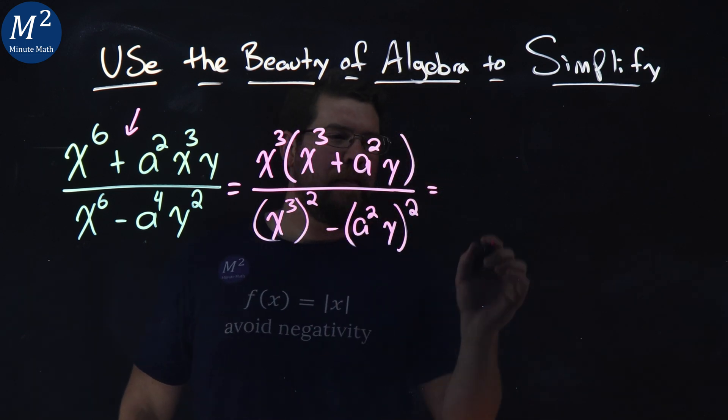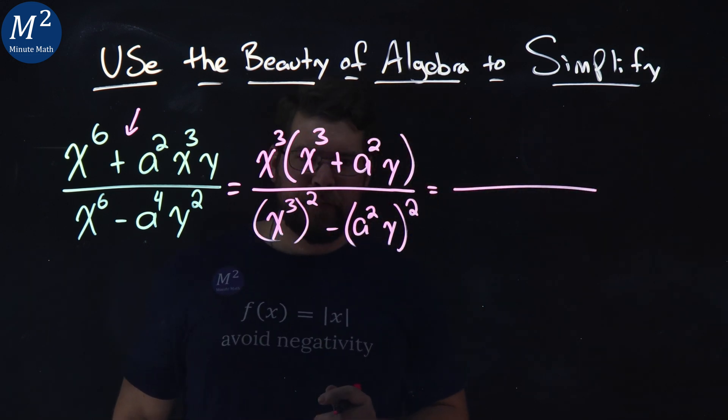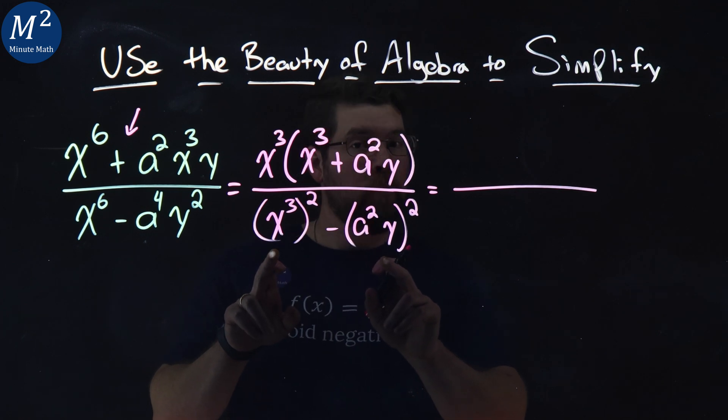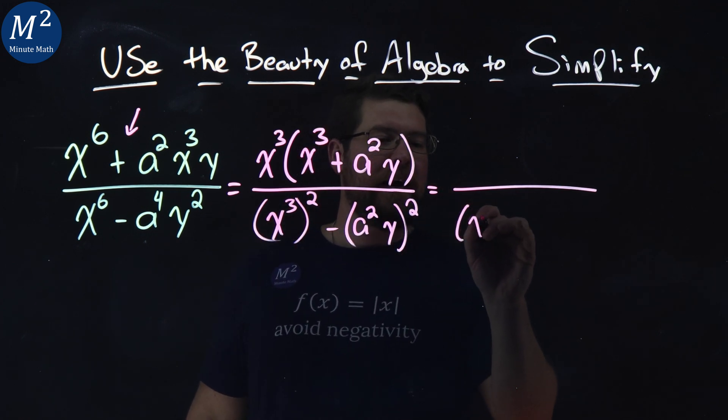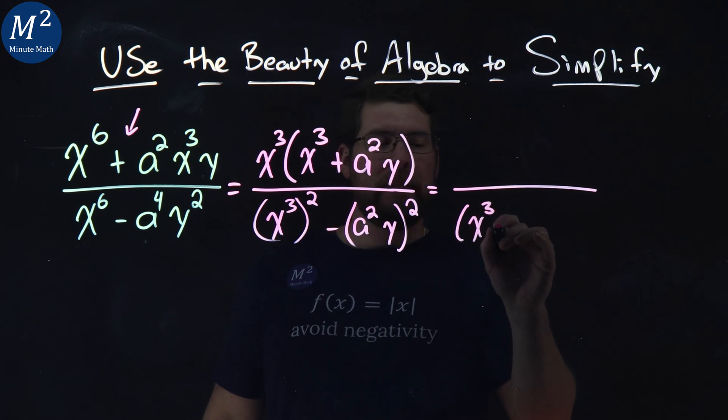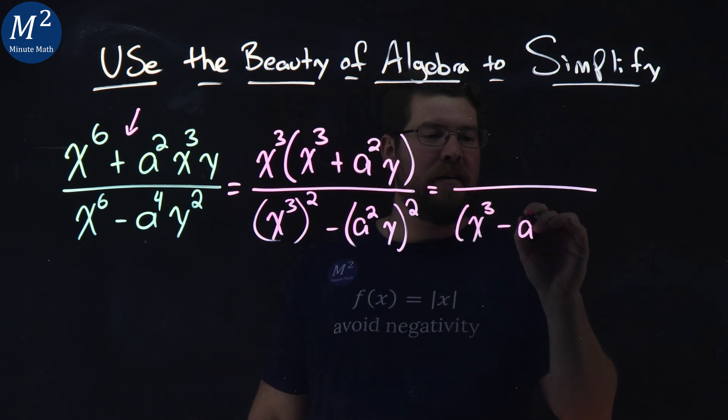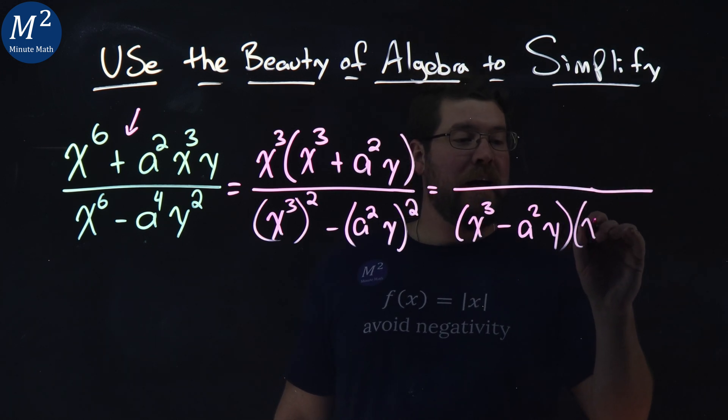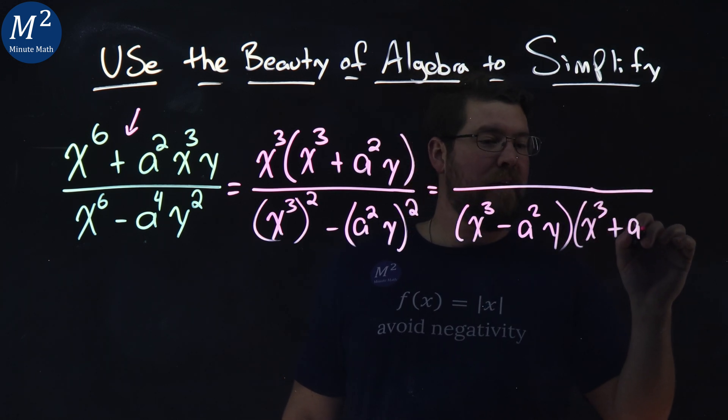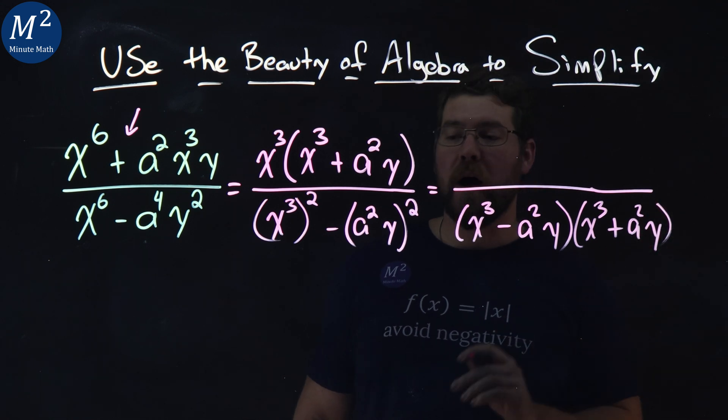Now let's look at the denominator again. We have a difference of squares meaning we can rewrite this denominator as x to the third minus an a squared y times an x to the third plus an a squared y.